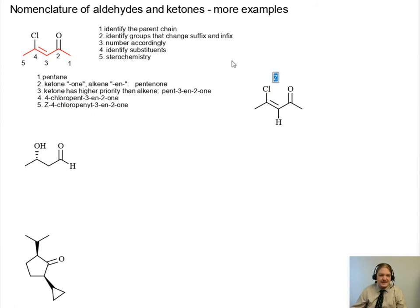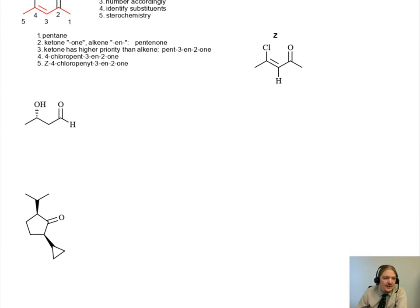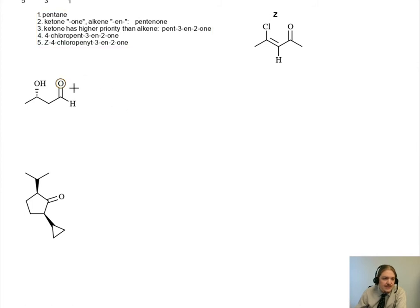This is a Z-alkene. In our second example, I've put in another functional group that can change the ending of the molecule. So we have an aldehyde and an alcohol in this structure. This is a molecule that has four carbon atoms, so it's some kind of butane.